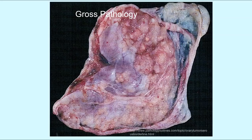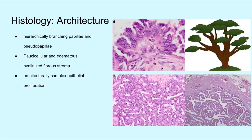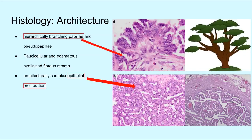Here we can see serous BOTs, which are multilocular with cystic fluid and papillary projections. When looking at serous BOTs histologically, you will notice that they have branching papillae and pseudopapillae looking like a tree. The cells lining these branches are complex epithelial proliferations. The top left photo shows the tree-like architecture.